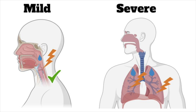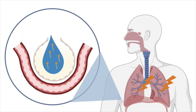In more severe, higher-grade drownings, some water will get past the larynx. That water in the lower airway is going to cause bronchospasm, and down in the alveoli it's going to cause direct cellular injury to the thin, fragile alveolar walls and surfactant washout, which is a really important component of the drowning process.